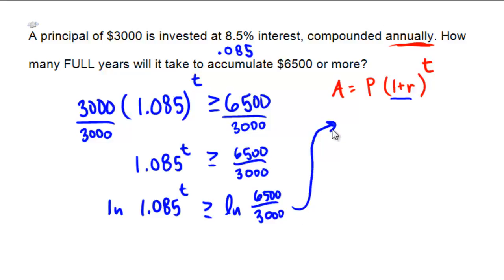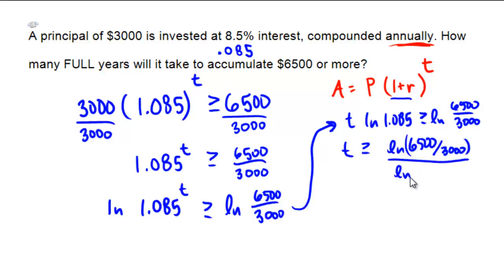Now because of logarithm rules, it can take that T exponent and pull it out in front. So we'd have T ln 1.085 bigger than or equal to ln of 6,500 over 3,000. And then that means that we just simply need T to be bigger than or equal to ln 6,500 over 3,000, all of this divided by ln of 1.085.